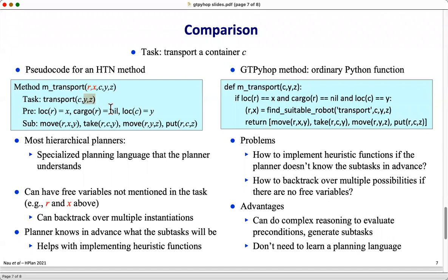Here's an HTN method for doing that, written as pseudocode with these preconditions and these subtasks. In most hierarchical planners, that's going to be written in a specialized planning language that the planner understands and can reason about.